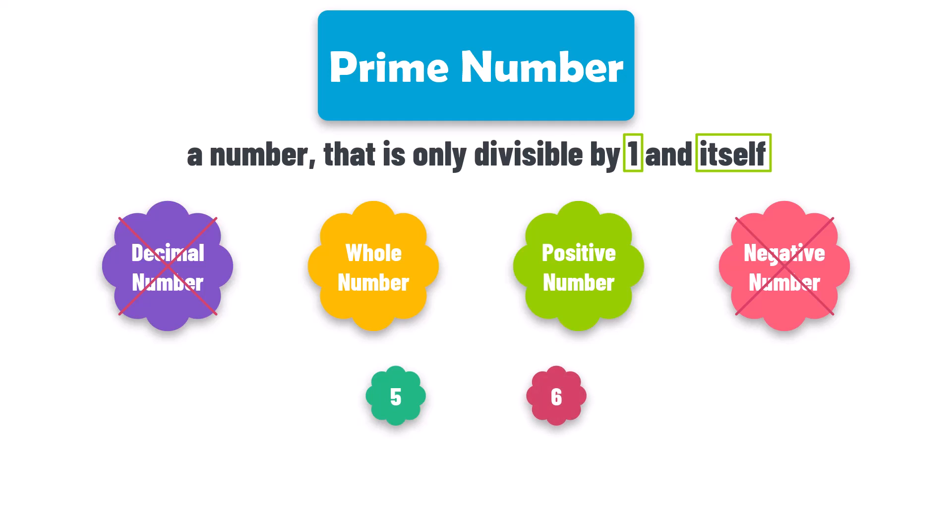The number 6, on the other hand, is not a prime number because it can be divided evenly by 1 and itself, but also by 2 and 3.